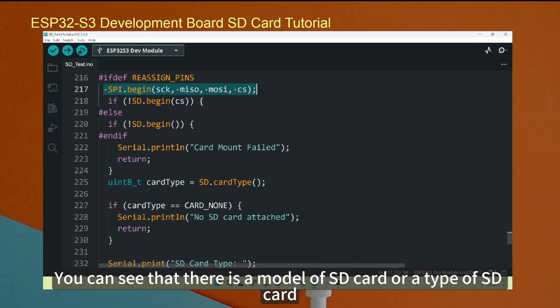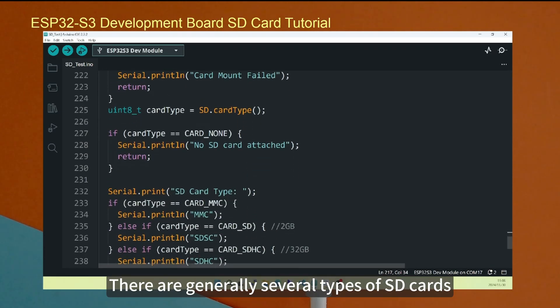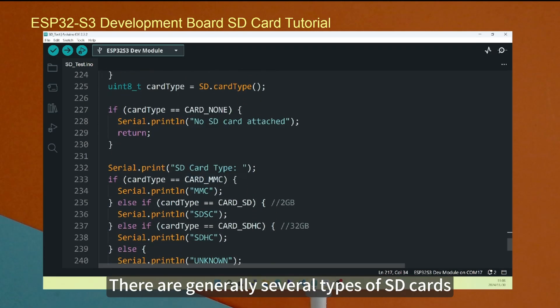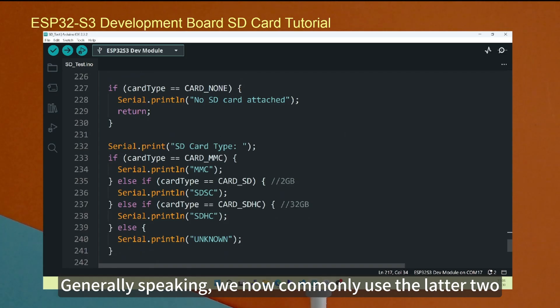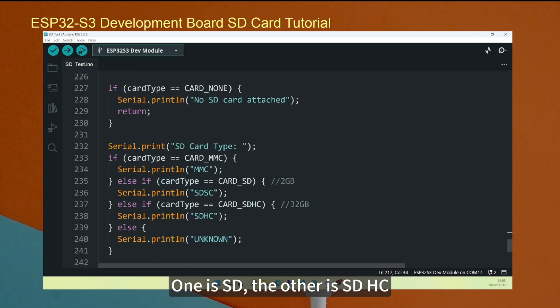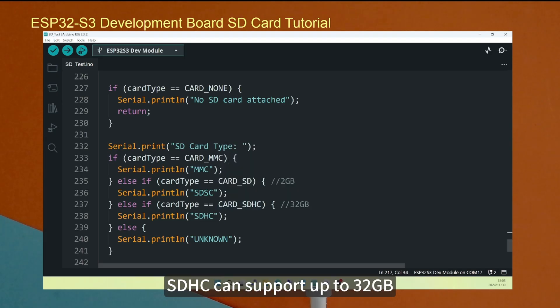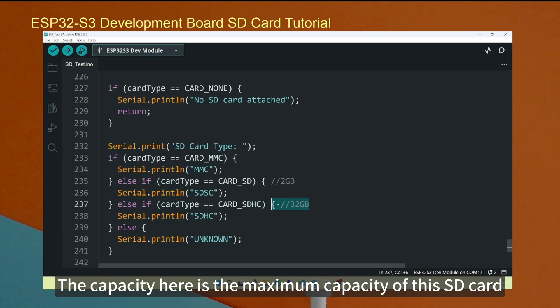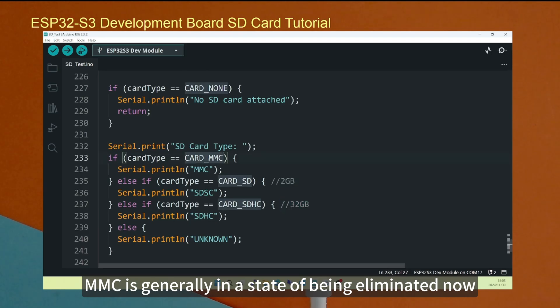You can see that there is a model of SD card or a type of SD card. There are generally several types of SD cards. This is a model of the SD card it supports. Generally speaking, we now commonly use the latter two. One is SD. The other is SDHC. Generally speaking, the largest SD card is 2G. SDHC can support up to 32GB. The capacity here is the maximum capacity of this SD card. MMC is generally in a state of being eliminated now.